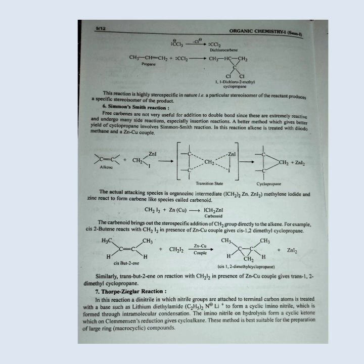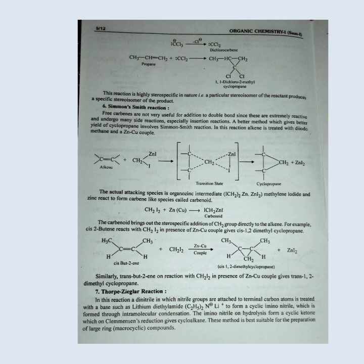Simmons-Smith reaction: Free carbenes are not very useful for addition to double bonds since they are extremely reactive and undergo many side reactions, especially insertion reactions. A better method, which gives a better yield of cyclopropane, involves the Simmons-Smith reaction. In this reaction, an alkene is treated with diiodomethane and a zinc-copper couple. The actual attacking species is an organozinc intermediate — methylene iodide and zinc react to form a carbene-like species called carbenoids.